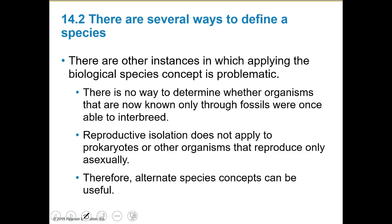There are other instances in which applying the biological species concept is problematic. There's no way to determine whether organisms known only through fossils were able to interbreed — you can't observe that, so it's hard to tell with fossils. Also, reproductive isolation does not apply to prokaryotes or other species that reproduce asexually, so that's a problem there as well.